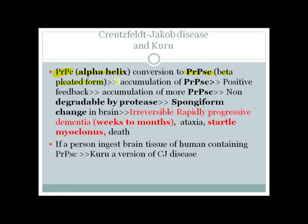This change may occur sporadically due to a mutation in the genome of that particular person, leading to accumulation of the beta-pleated sheet form, PrPSc. This beta-pleated sheet form then causes a positive feedback loop, driving conversion of more and more alpha-helix to beta-pleated form.